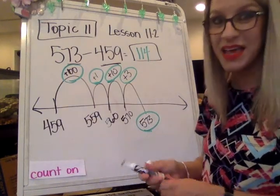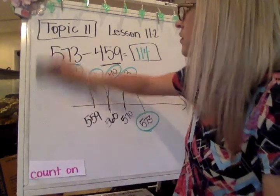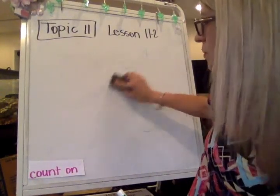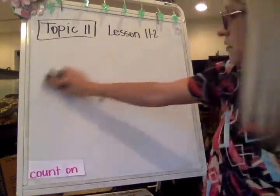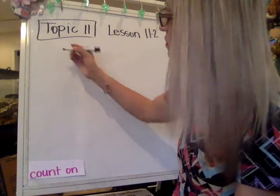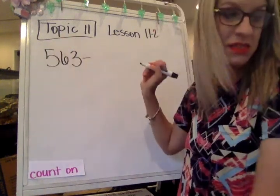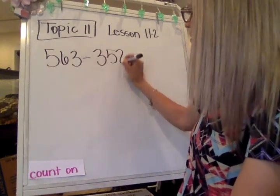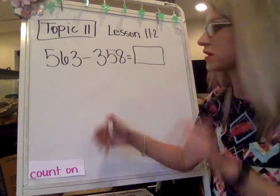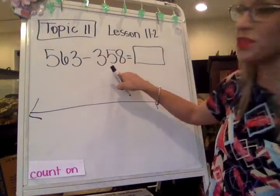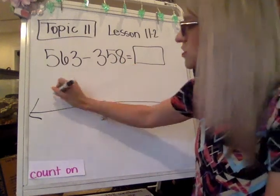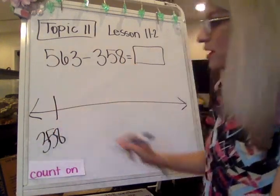And I used the counting on. I could have done count back, but for this one I wanted to add up in order to count on. Now I'm going to do a couple more with counting on and then we'll talk a little bit about the counting back. All right, so the next one is going to be 563 minus 358. Again, I'm going to use count on on an open number line. So we're starting with our open number line, I'm going to start with a smaller number because I'm counting on and then this is going to be my stop number, the 563.